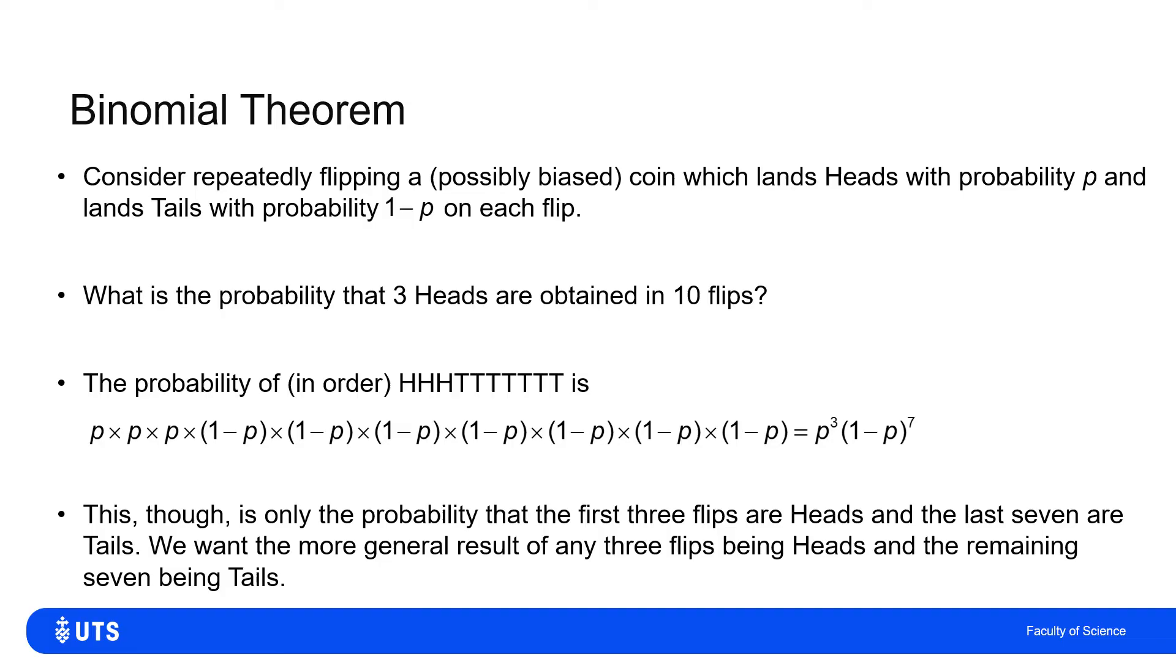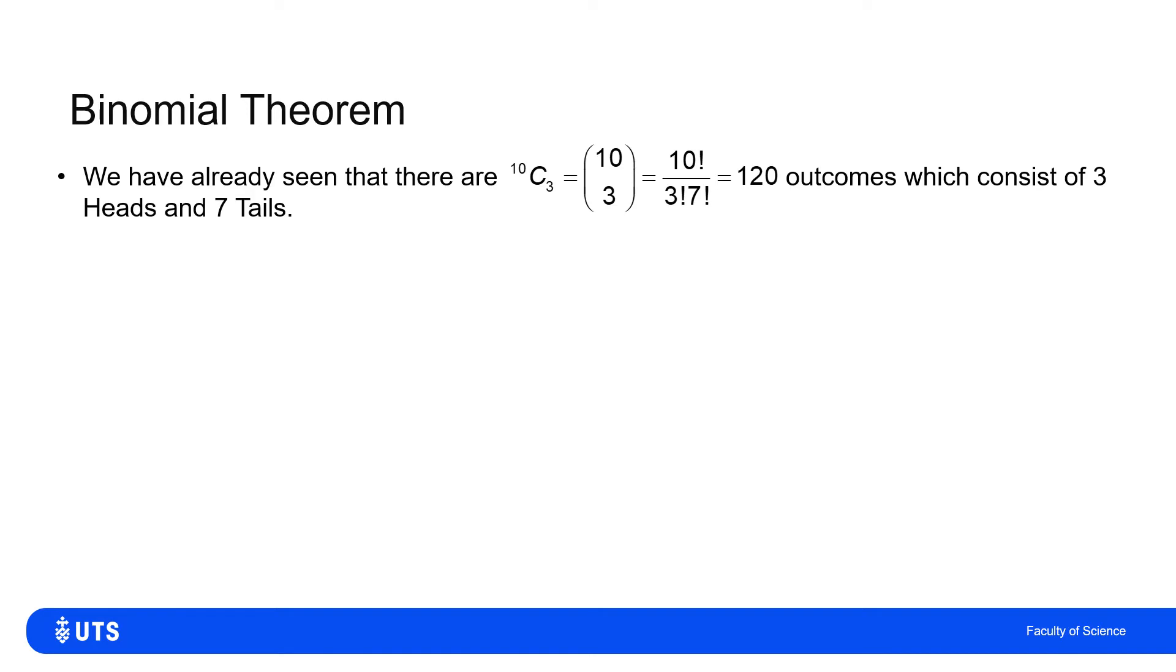But the original question was what's the chance of getting three heads in the 10 flips, not getting three heads as the first three results, followed by zero in the last seven. So I need to account for how many ways three heads and seven tails could be arranged in an outcome in a string of 10 outcomes. Now we've already seen how to do this. This is just a permutation problem with repetition. So we can consider this as the combination formula. So 10 choose three is 10 factorial